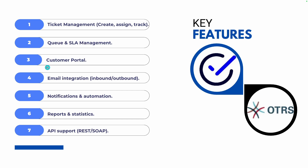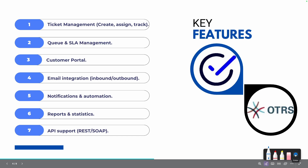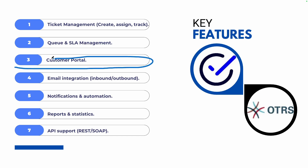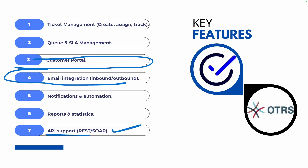There is a customer portal option and an agent portal — two main interfaces. You can also integrate OTOBO with email to send notifications to respective stakeholders. There are custom notifications and automations for triggering events and managing tasks behind the scenes. You can also create reports and statistics. A very useful feature is API support with REST and SOAP — it provides endpoint URLs so you can create, manage, update, and delete tickets over the API.